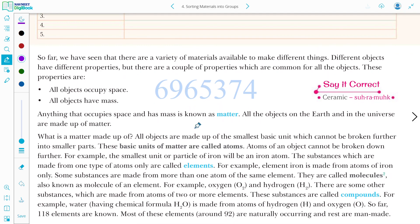Now here we are going to study about matter. Matter, what is it? A matter is anything that occupies space and has mass. All objects occupy space. All objects have mass. All the objects on the earth and in the universe are made up of matter. What is matter made up of? Matter is made up of the smallest basic unit which cannot be broken further into smaller parts. This basic unit is atom.